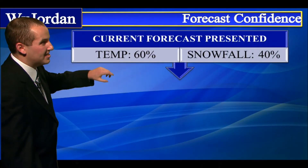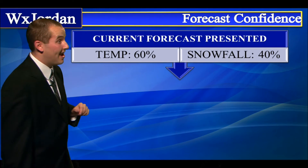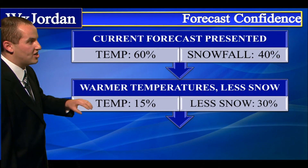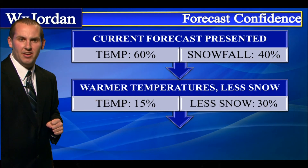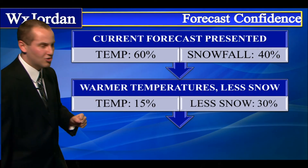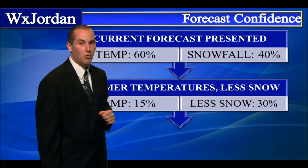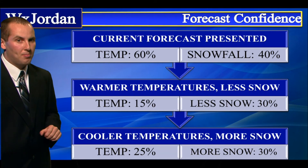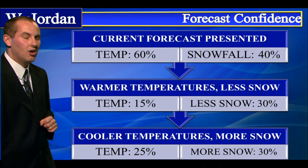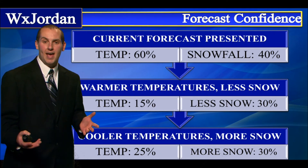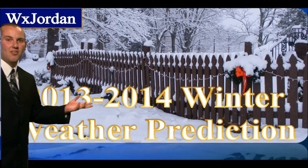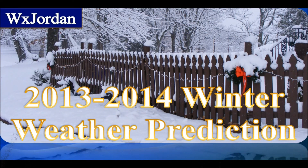Here's the forecast: a 60% chance of average temperatures and a 40% chance of average snow here in North Carolina. There's about a 15% chance of warmer than average temperatures and a 30% chance of less snow than average. Cooler temperatures and more snow is definitely a possibility — 25% chance of temperatures being cooler than average and a 30% chance of more snow than average. That's my 2013-2014 winter weather prediction. I'm meteorologist Jordan Young.